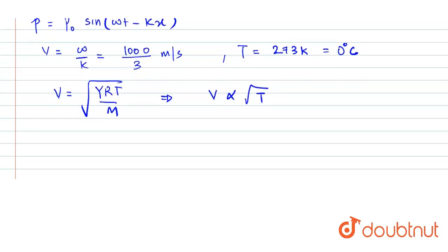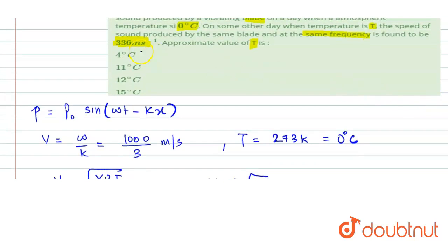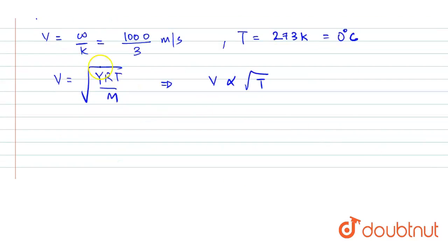We have to find the temperature when the speed of sound becomes 336 meter per second. So now we can use this relation. That would be V₁ was 1000 by 3 and V₂ is 336, equals to root of T₁ by T₂. So T₁ temperature was 273 and we have to find the temperature T₂ or T dash.